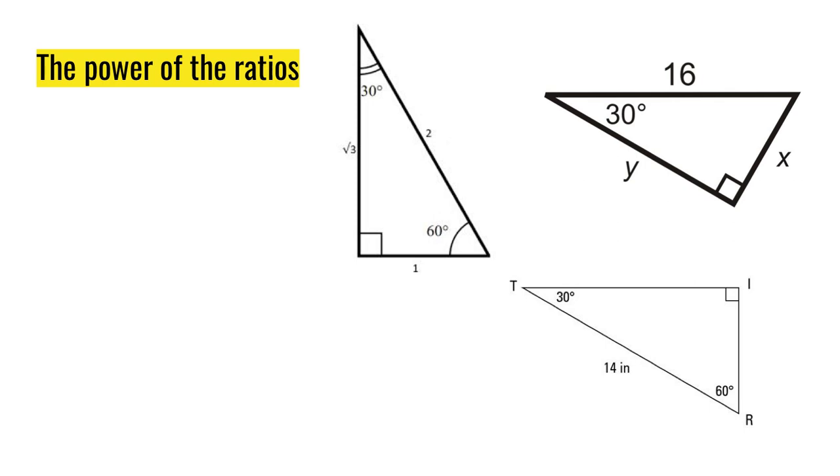Because they are similar, we're able to find out some of the missing side lengths for the two triangles on the right. The one on the left, all of the side lengths are given to us: 1, 2, square root of 3. We can apply the special right triangle theorem. We know that this side is half and will be 8. We can solve the Pythagorean theorem to find that this is 8 square root of 3.